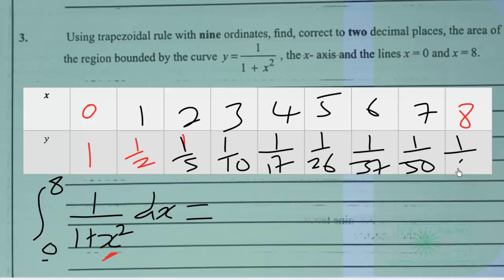So our formula now becomes 1 over 2 times h, which is 1, then the y values are the first one and the last one here, which is 1 plus 1 over 65. Then we have plus 2 times the remaining values of y.